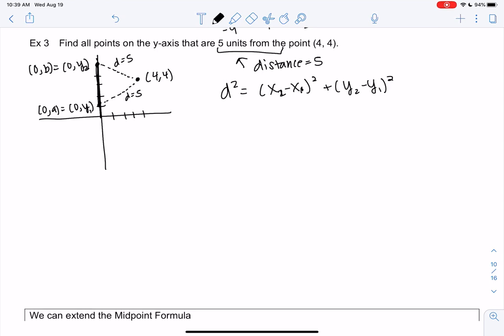So we'll get two equations like last time. Let's do this one, and then we'll do this one. So my first equation, we get 5² = x... We'll call the 4s the x₁s, and these are my 2s. So we'll get (0 - 4)².